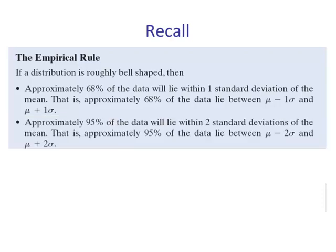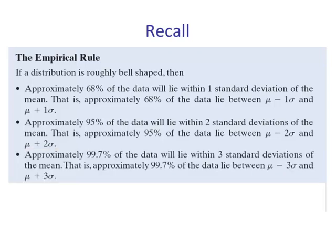Approximately 95% of the data lie within two standard deviations of the mean. So if we go two below the mean and two above the mean, this will contain 95% of the data. Approximately 99.7% of the data will lie within three standard deviations of the mean — if we go three standard deviations below and three above, this will contain almost all the data, 99.7% approximately.